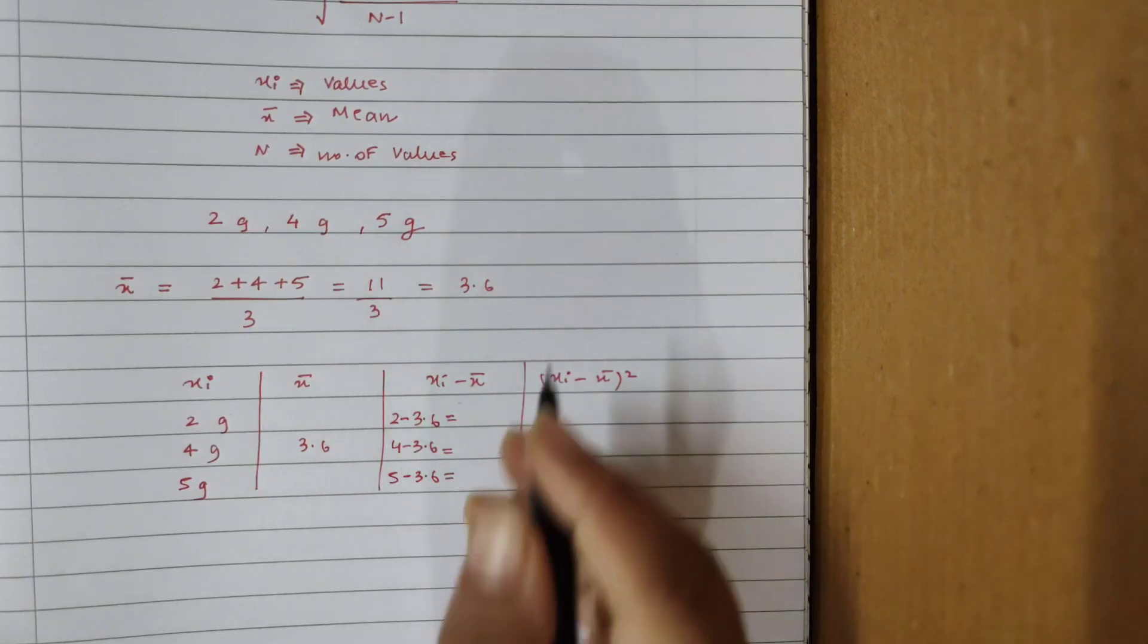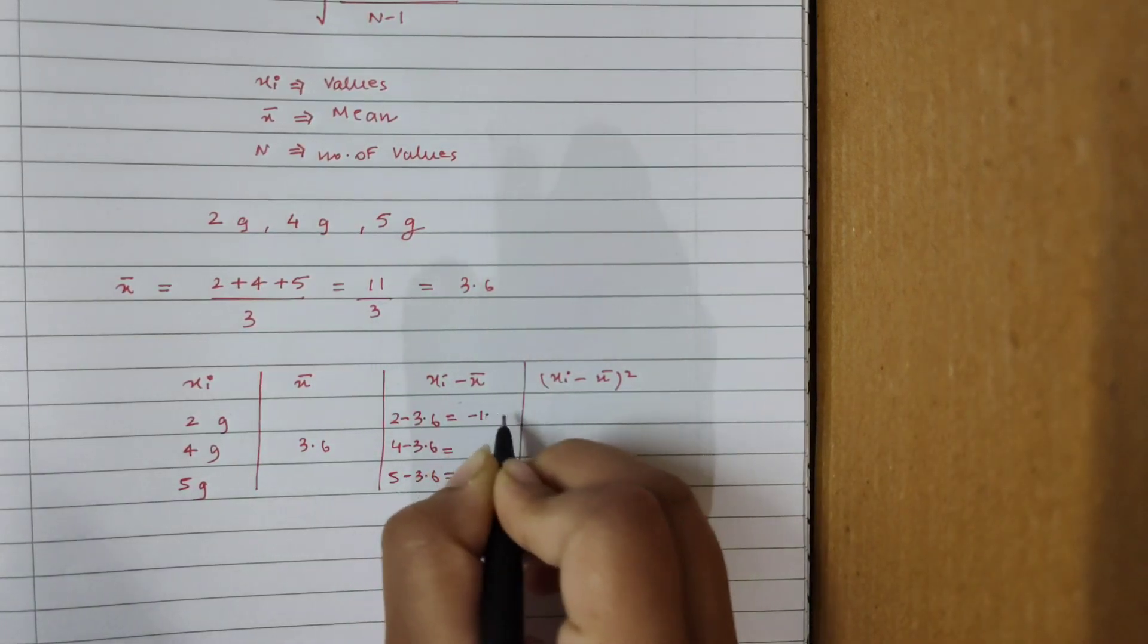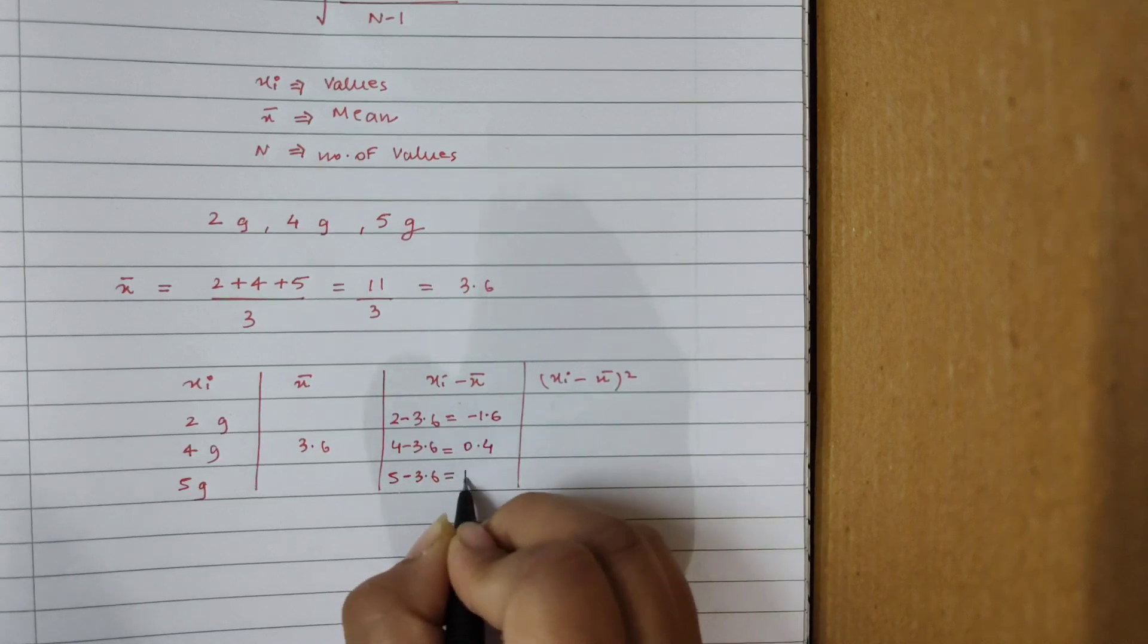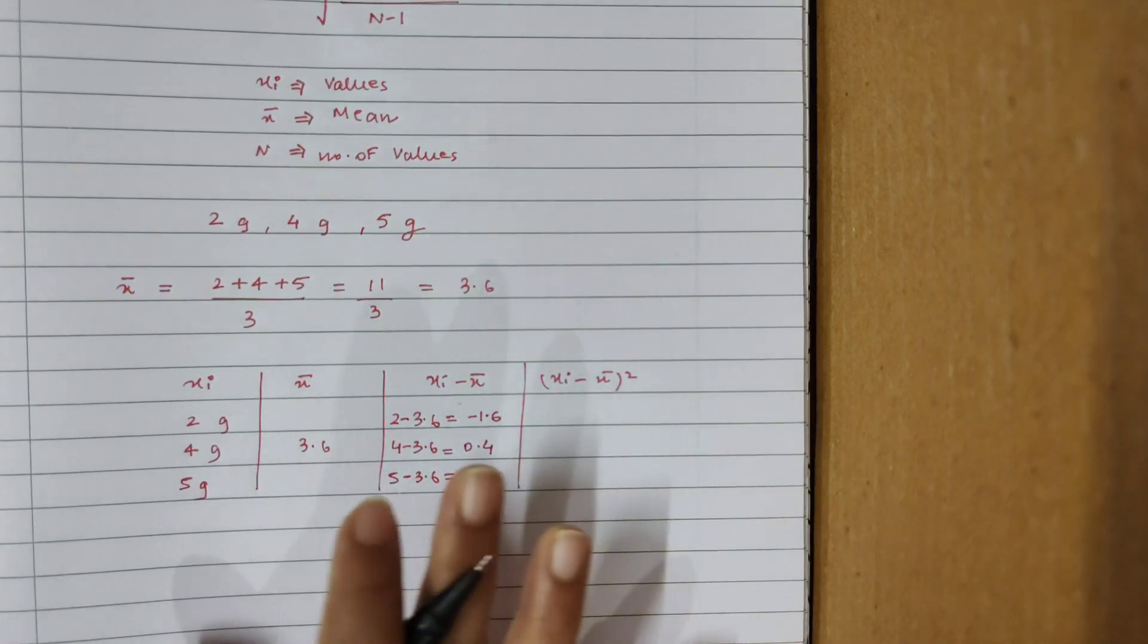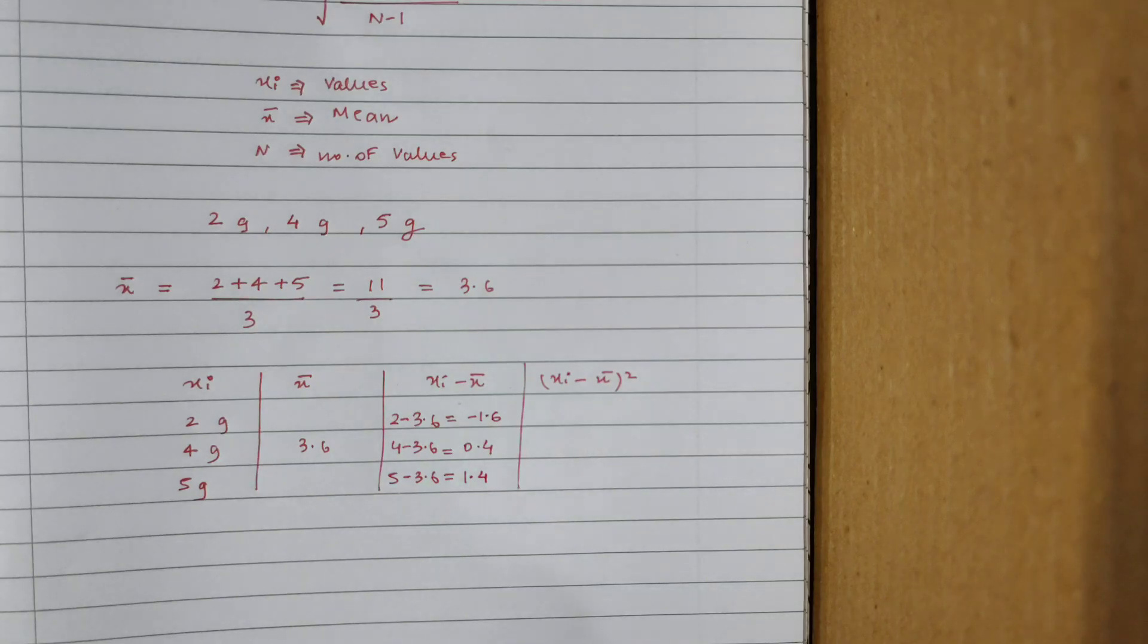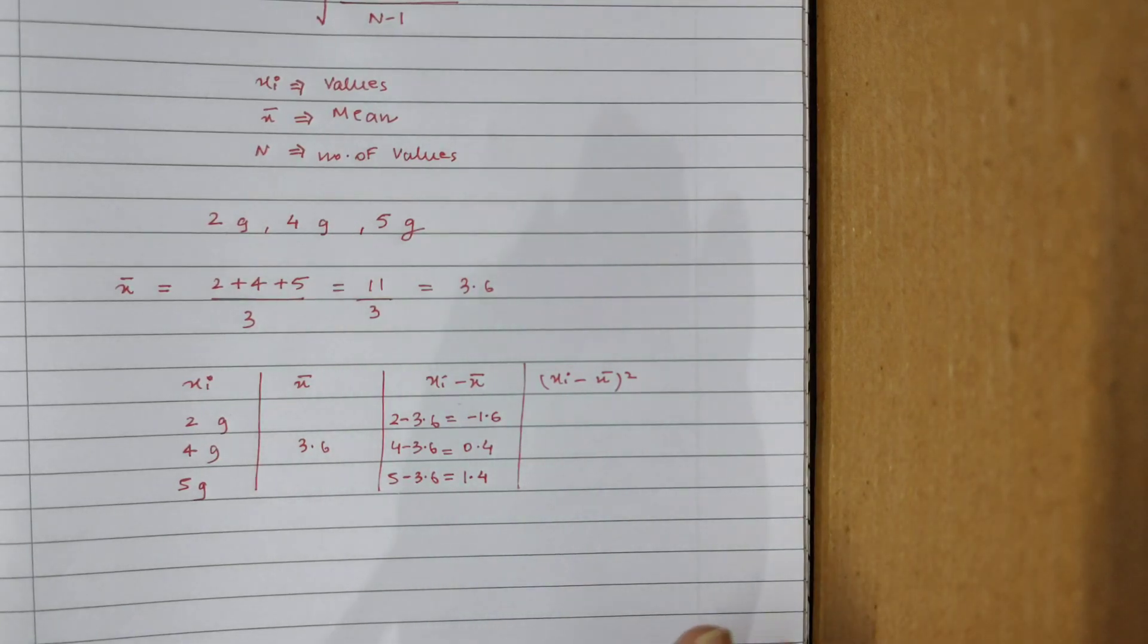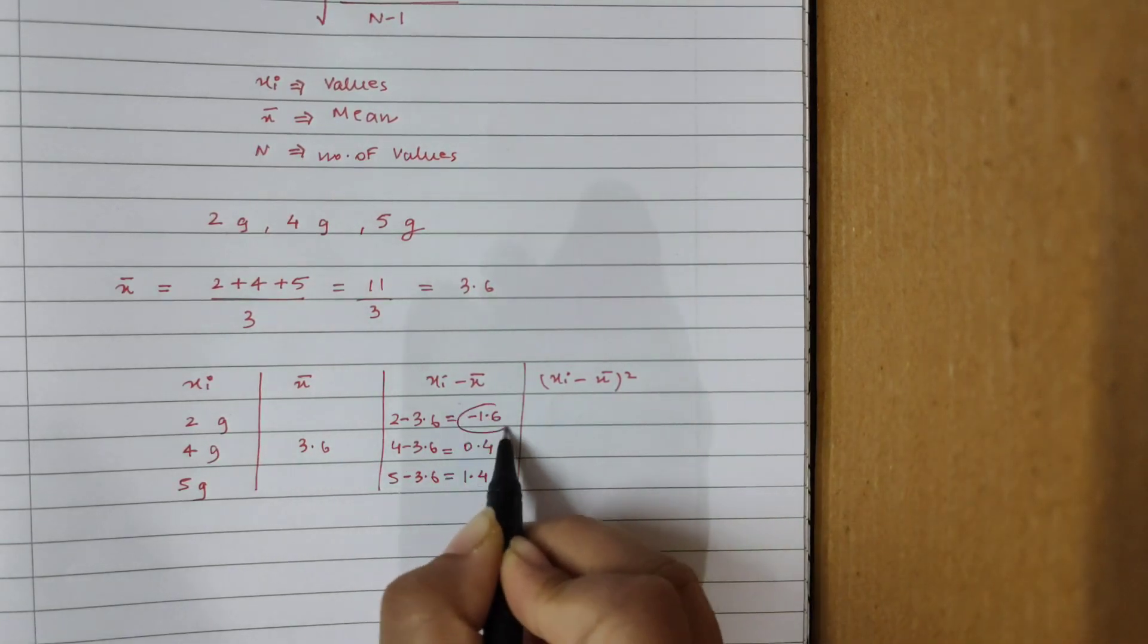Over here I will get minus 1.6, over here I will get 0.4, and over here I will get 1.4. I've already done the calculations, so don't think that I'm a human calculator. I have done it on a rough page. Lastly, all I have to do is just square these values.